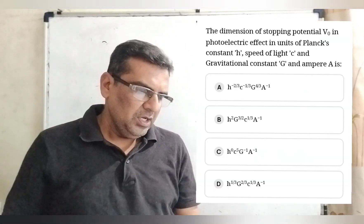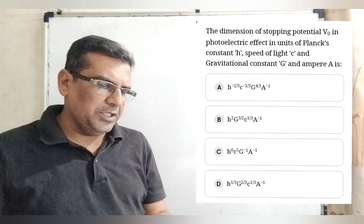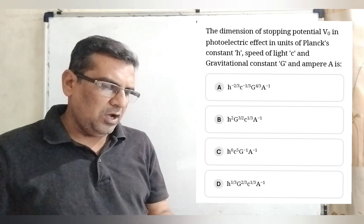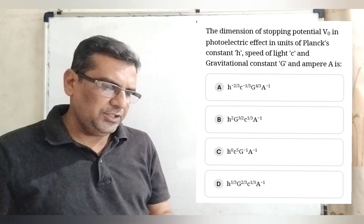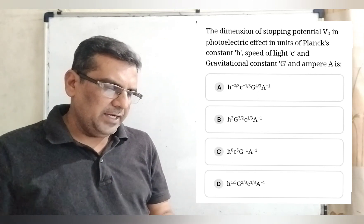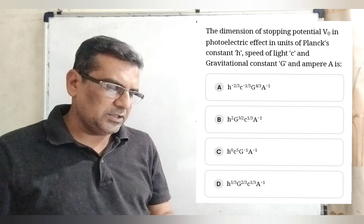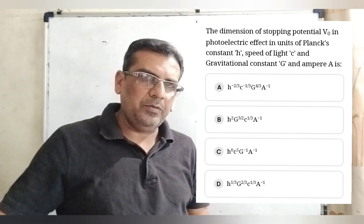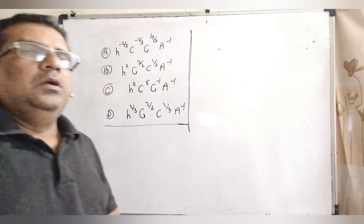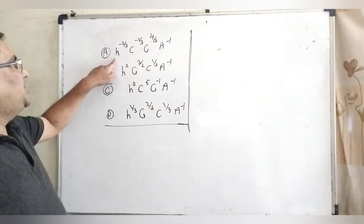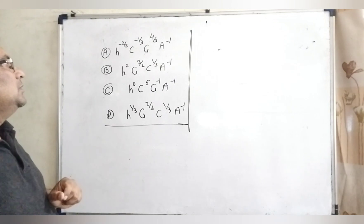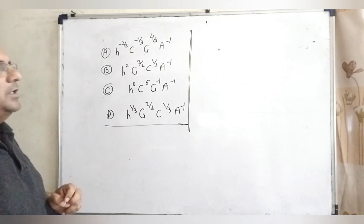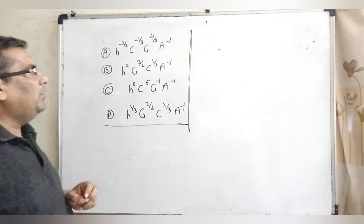In the question, we need to find the dimension of stopping potential V₀ in the photoelectric effect, in units of Planck's constant h, speed of light c, gravitational constant G, and ampere A. We have four options. Option A: h raised to power −2/3, c raised to power −1/3, G raised to power 4/3, and A raised to power −1.